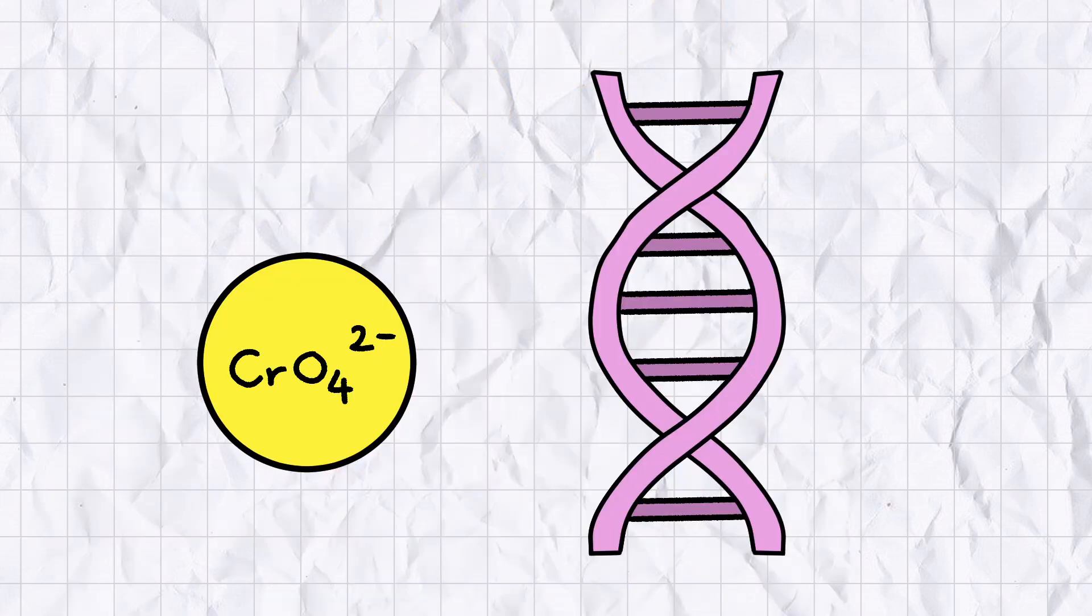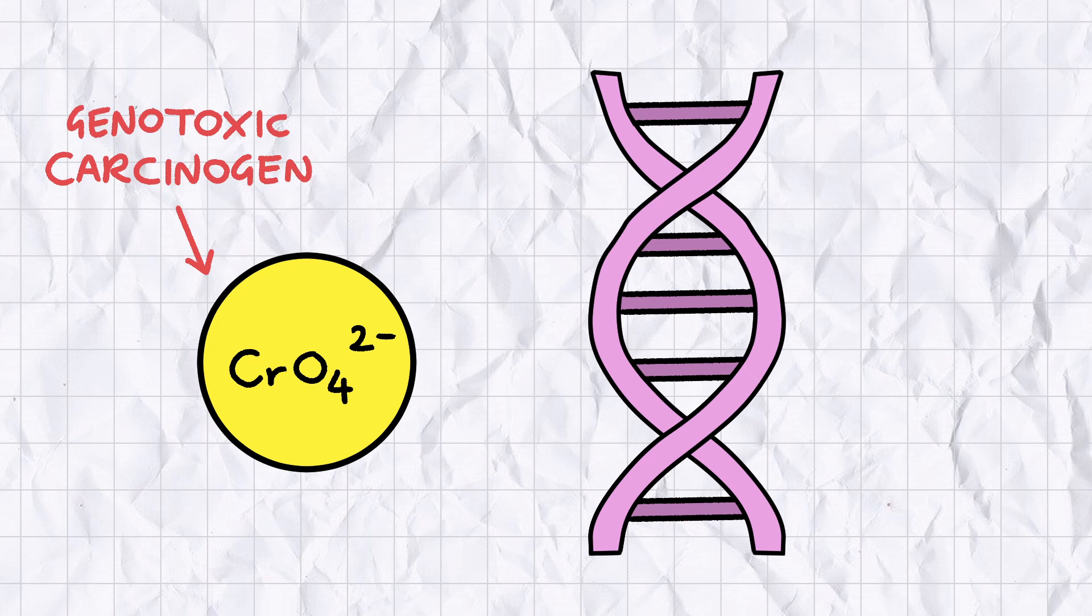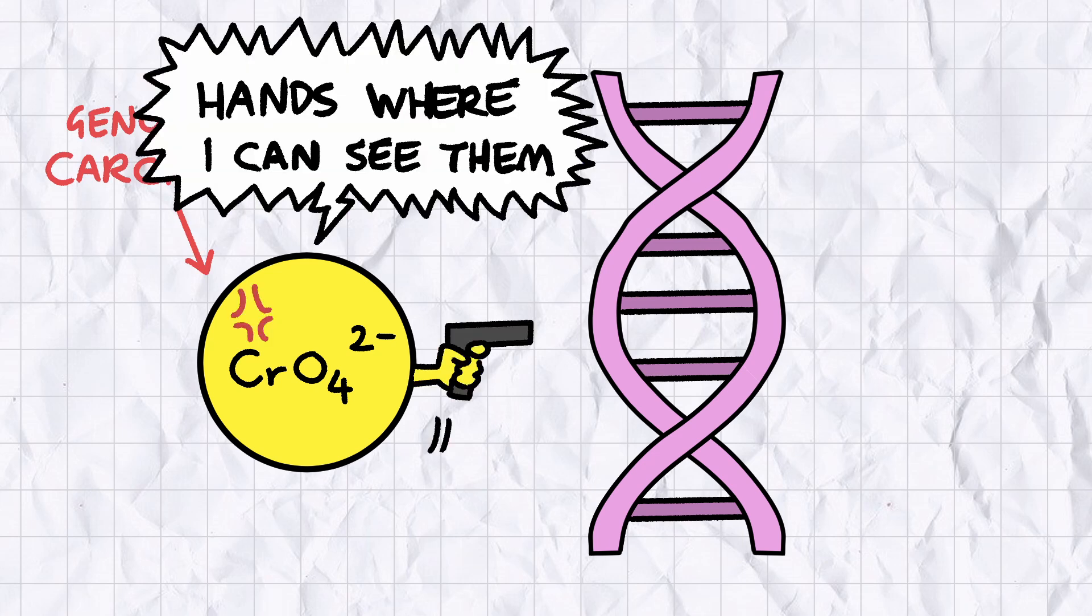The chromate ion, one of the most common plus 6 chromium ions, is a genotoxic carcinogen, which means it causes cancer by irreversibly reacting with DNA inside your cells.